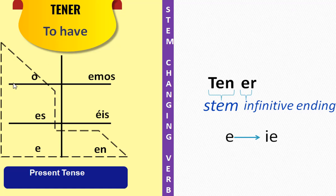Now, you may think you want to say 'I have' as YO TENER, but that is not correct. Here, TENER is a rule breaker. The YO form doesn't follow the stem-changing rule — it is altogether a different word: TENGO. So 'I have' is TENGO.